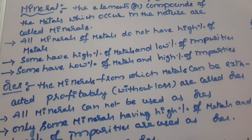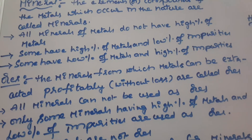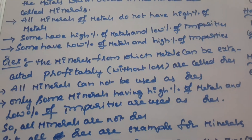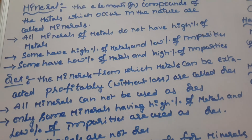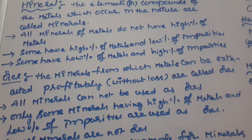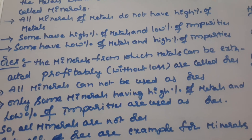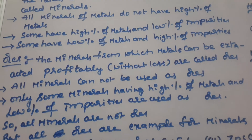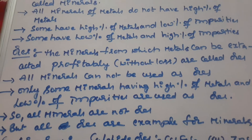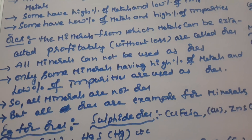The mineral from which metals can be extracted profitably without economical loss is called an ore. All minerals cannot be used as ores — only minerals having a high percentage of metal and low percentage of impurities can be used as ores. That is why all minerals are not ores, but all ores are examples of minerals.